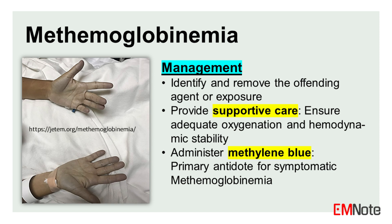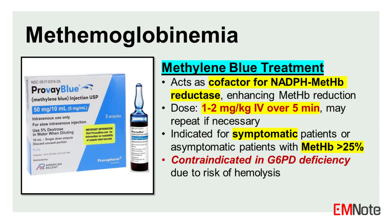The management of methemoglobinemia depends on the severity of the condition and the underlying cause. Steps include: (1) identify and remove the offending agent or exposure; (2) supportive care to ensure adequate oxygenation and hemodynamic stability; (3) methylene blue, which is the primary antidote for symptomatic methemoglobinemia. Methylene blue acts as a cofactor for NADPH methemoglobin reductase, enhancing the reduction of methemoglobin to functional hemoglobin.